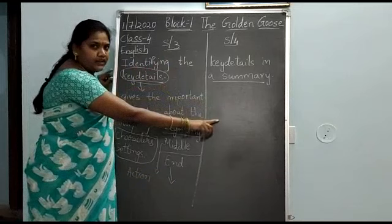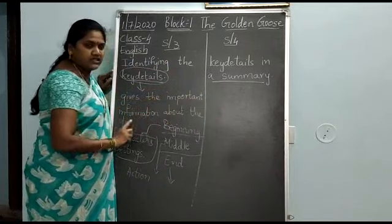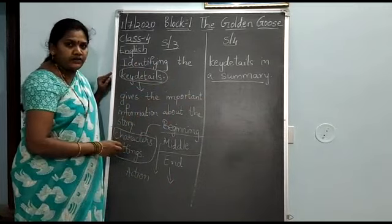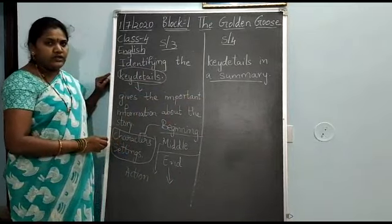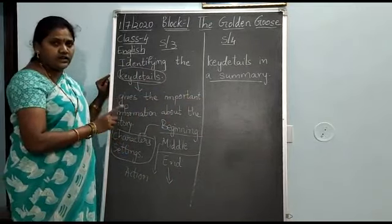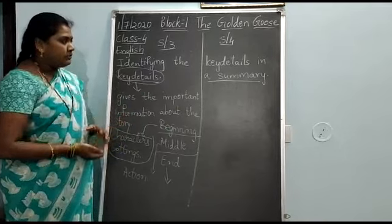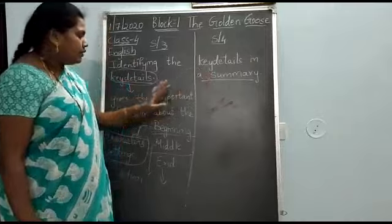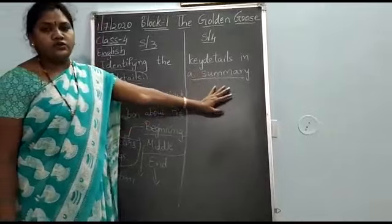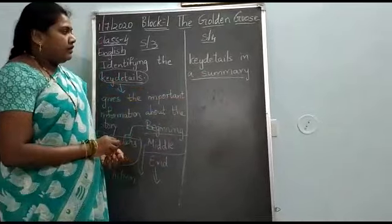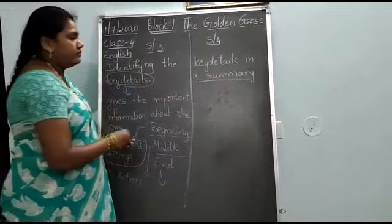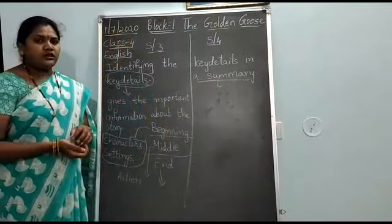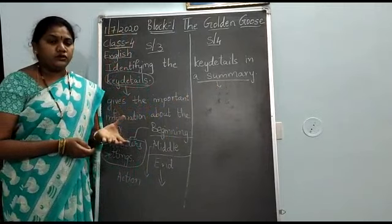After completing how to write a summary by using the key details, after the explanation, I will ask you to open your workbook. Then we are going to continue with the workbook in S3 and S4. Let me continue with S4 also — key details in a summary. How these key details are useful to write a summary? First of all, what is summary? Summary means which gives the overall understanding of the whole story.